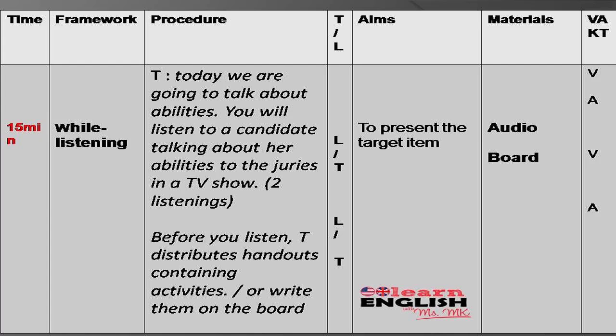After that, I move smoothly to the while-listening phase. I tell them we are going to talk about abilities and identify the context: you are going to listen to a candidate talking about her abilities to the jury in a TV show. I should make them listen twice — sometimes three times — depending on the level of your pupils. Importantly, you ask them to write the activities on the board or distribute handouts containing the activities before you make them listen, so they can get familiar with the script and have a general idea about it.